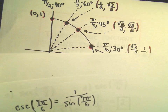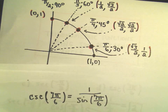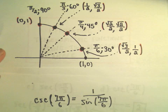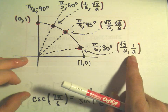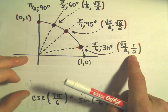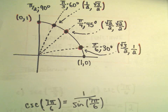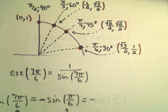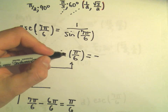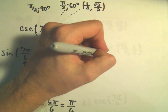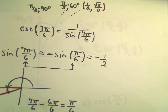So we'll get negative sine of π over 6. Let's find π over 6 on the unit circle. Here's our angle π over 6. Sine has to do with the y-coordinate, which is going to be 1/2. So we'll get negative sine of π over 6, which is going to be negative 1/2.